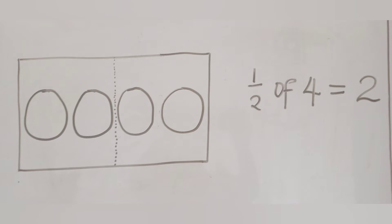It simply means that if you have 4 objects and you want to get half of it, what do you need to do? You divide the 4 objects into 2 equal parts and that will give you 2 on each part.